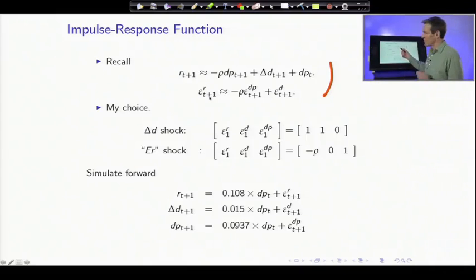To have a return shock, you have to move either the dividend yield, you have to move prices, or you move dividends. They are linked together. So we have to choose which pairs we want to move, which underlying two shocks do we want to do.